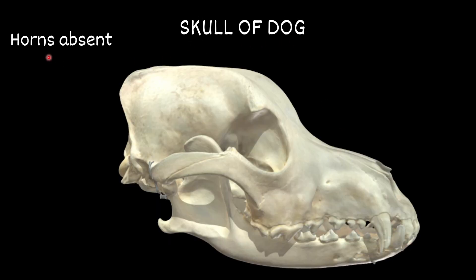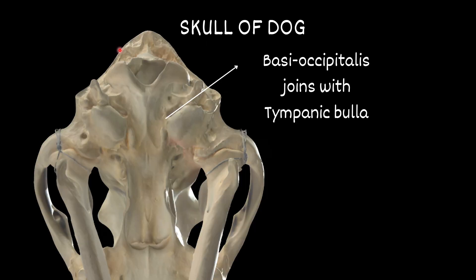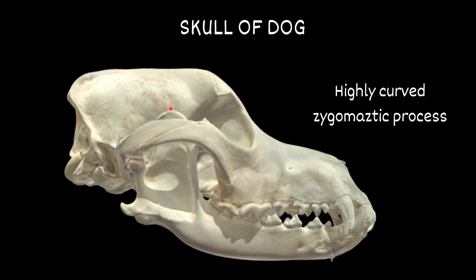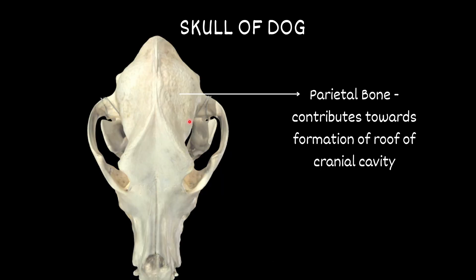Next is the skull of the dog. Horns are absent. The basioccipital joins with the bulla tympani. The zygomatic process is highly curved. The parietal bone contributes towards the formation of the roof of the cranial cavity.